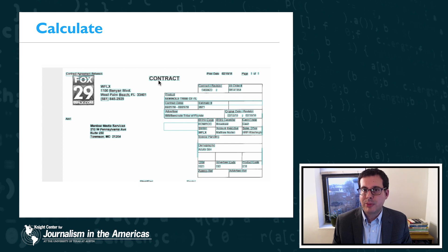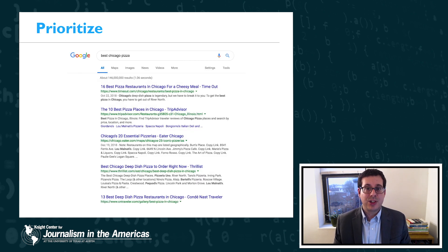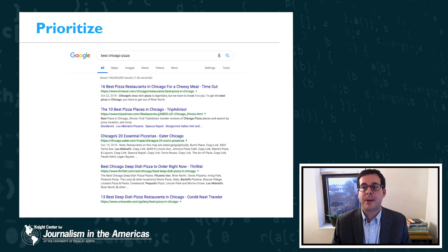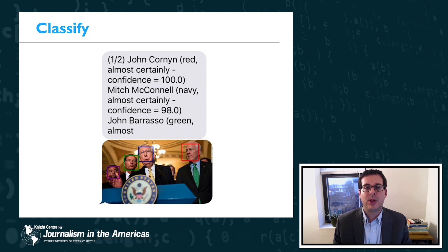Many tasks don't have an easily demonstrable correct answer, but instead involve a lot of subjective judgment. Algorithms can prioritize information, and prioritization decisions are really important in news because of the limits of human attention and information overload. It's helpful to find the most important thing and show it at the top of the screen. We're all familiar with search algorithms, which prioritize results with respect to some query. Classification decisions are about deciding which category something belongs to — useful in content production for finding information classified in a certain way, like finding a photo of a particular politician.